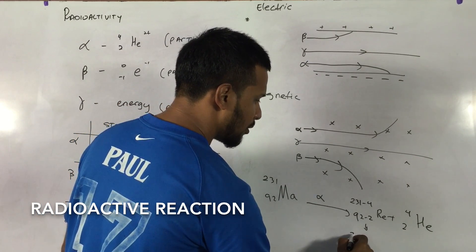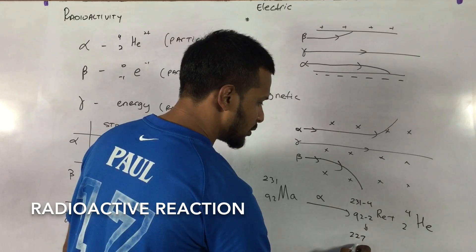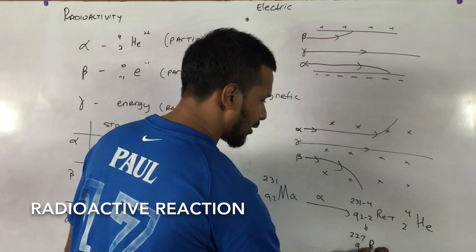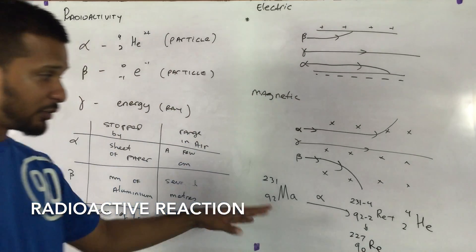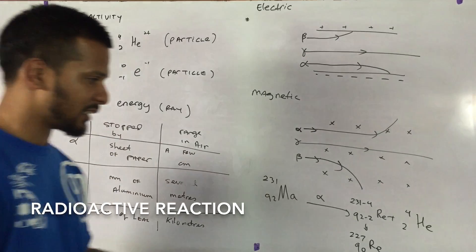231 minus 4 is 227, 92 minus 2 is 90, R, E. So if it loses an alpha particle, one alpha particle, this is what will happen.